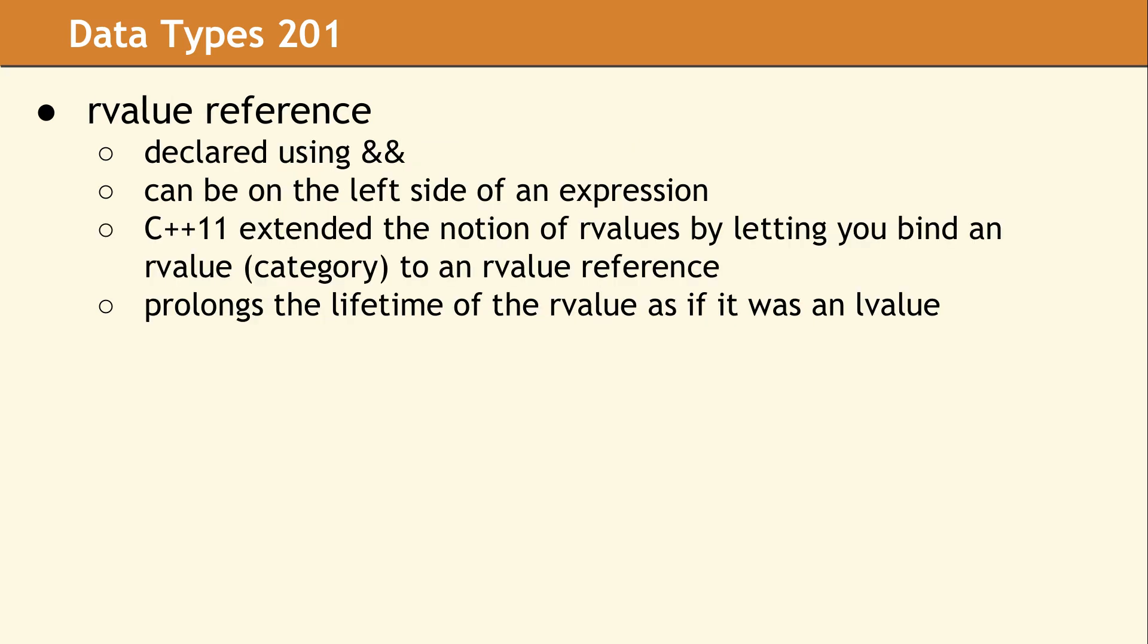As you've seen, an R value reference data type is declared using two ampersands. It can certainly be on the left side of an expression. An R value reference does not indicate the value category. It indicates the data type, so it does not indicate how you can use the parameter. C++11 extended the notion of R values by adding the R value reference data type and letting you bind an R value value category to an R value reference variable. Doing this prolongs the lifetime of the R value as if it were an L value, and we'll show you an example of this later on.